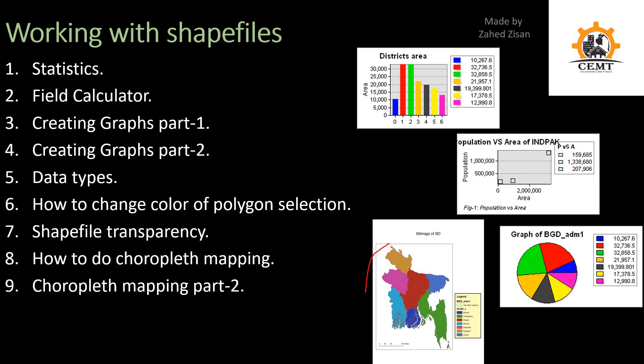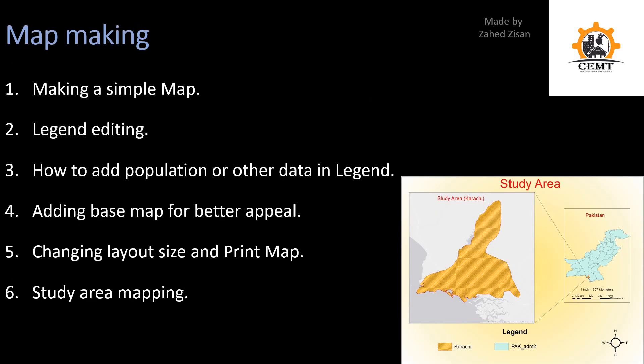After that we're going to learn about choropleth mapping. A choropleth map uses different colors within a single shapefile to represent different values, as you can see in the map shown here.